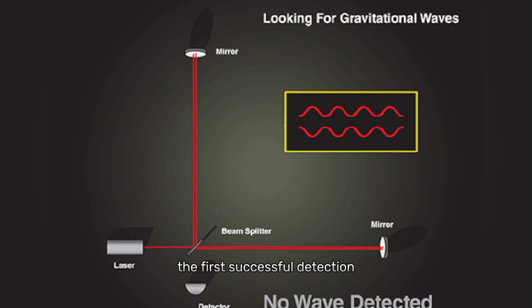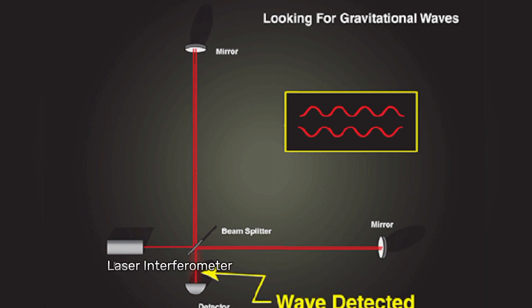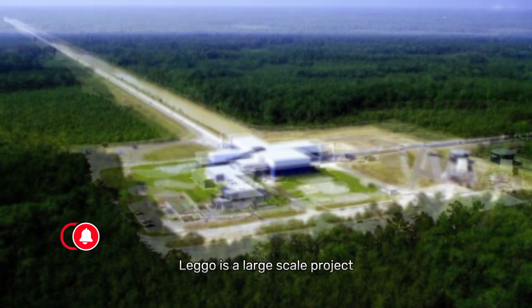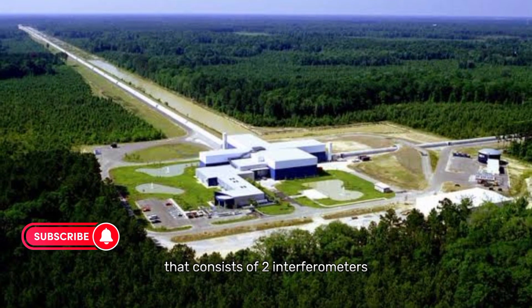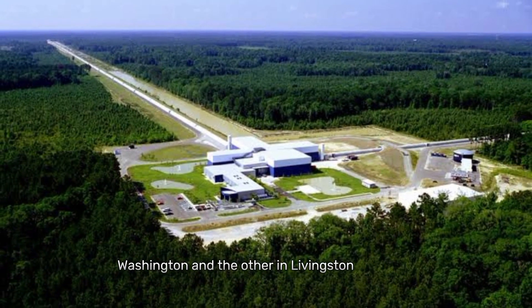The first successful detection of gravitational waves was made in 2015 by the Laser Interferometer Gravitational Wave Observatory, or LIGO. LIGO is a large-scale project that consists of two interferometers, one in Hanford, Washington, and the other in Livingston, Louisiana.